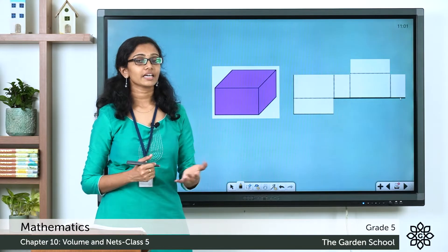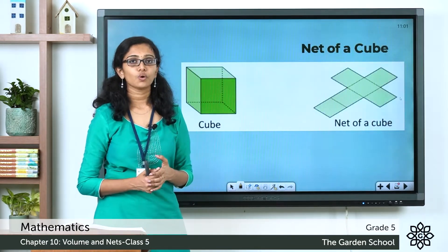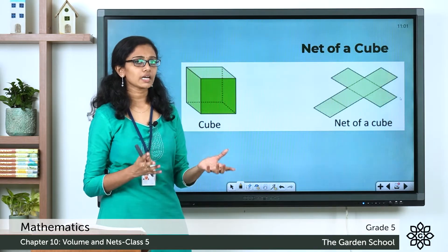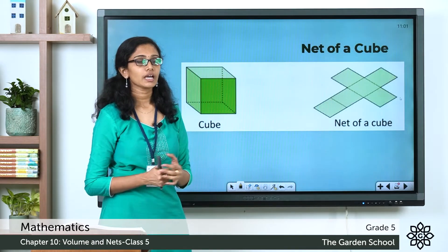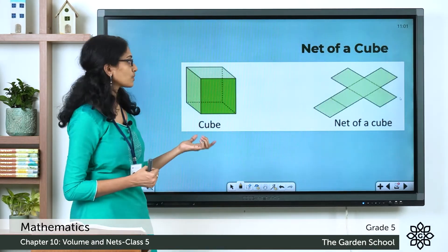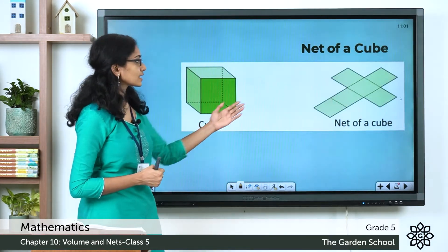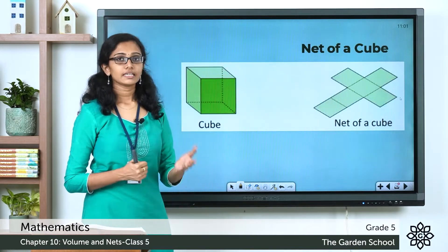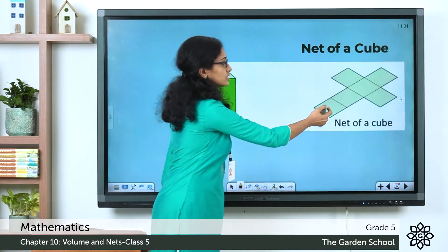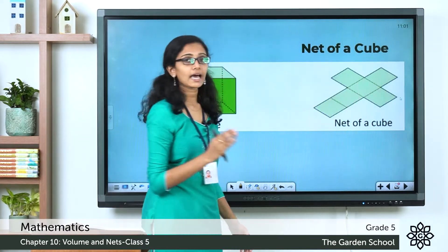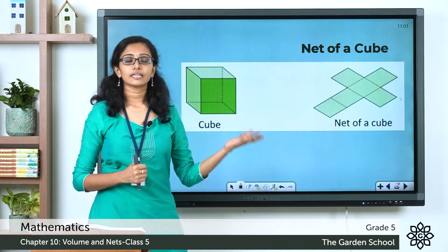Now let's see the nets of a few 3D shapes. First, the net of a cube. A cube is also a type of cuboid in which the length, the breadth, and the height are all the same. A cube has got six faces, like in the case of a cuboid. Here you can see the net of a cube — there are six faces on this solid cube, and in the net there are also six faces, and the shape of the faces match both in the solid shape as well as in the net.